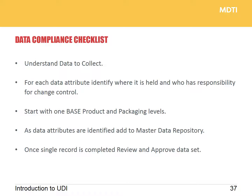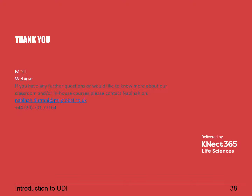In regards to data compliance at a very high level: firstly, understand the data you need and the constraints for each attribute. Internally, find out where it is, who holds it, and who has responsibility for change control. Start with one base product and its packaging levels. As you find each data attribute, add it to your master data repository. Once a single record is completed, review it, approve it, and put the data set on strict change control. I know we've covered an awful lot of detail in a very brief period of time — I hope you found it of use. We're now going to open up the question and answer session, so please do start asking any questions you have on any of the topics covered in this webinar. Many thanks.